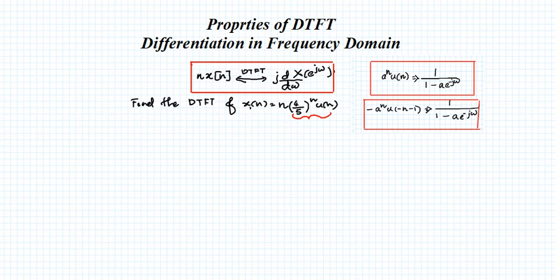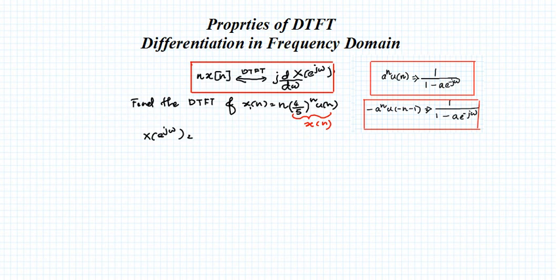We can assume x(n) = (4/5)^n·u(n), so x1(n) = n·x(n). The signal (4/5)^n·u(n) is in the general form a^n·u(n), whose DTFT is 1/(1 - a·e^{-jω}). Therefore, X(e^jω) = 1/(1 - (4/5)·e^{-jω}), which is the Fourier transform of the (4/5)^n·u(n) part.